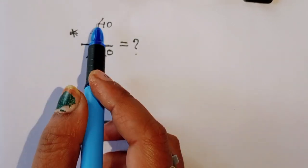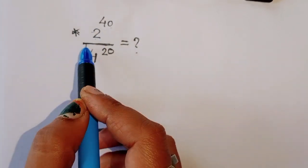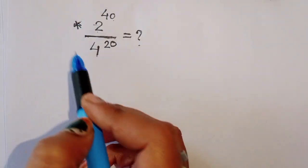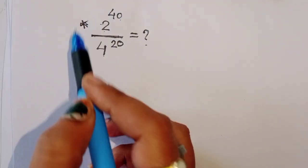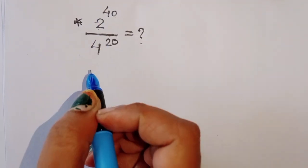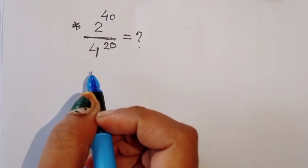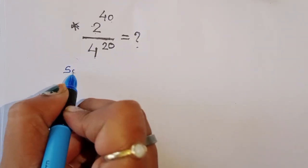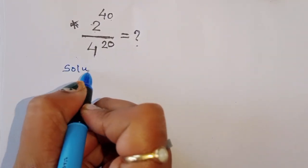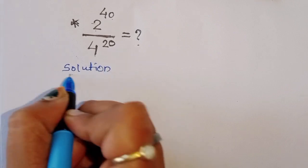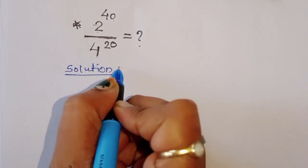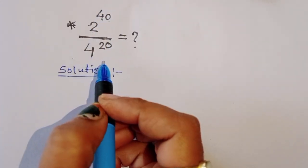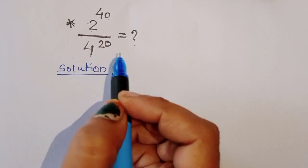We are given 2 power 40 divided by 4 power 20. We have to find out the value of this expression. We can find out the value in two ways.